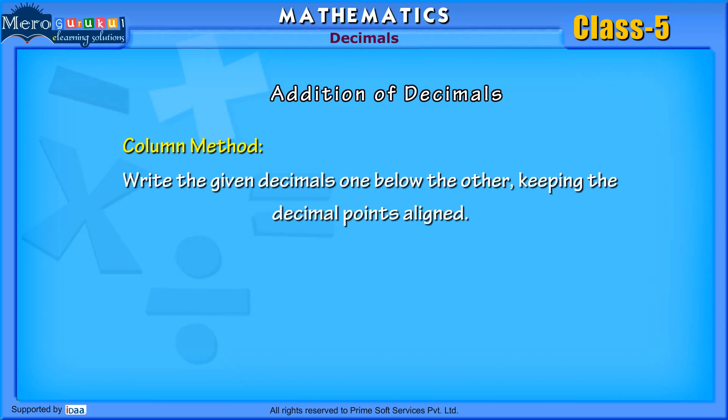Column Method: Write the given decimals one below the other, keeping the decimal points aligned. Add the tenths.